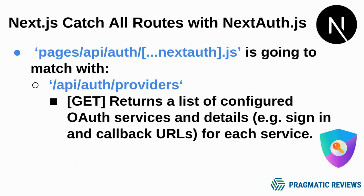Another example: /api/auth/providers — when we perform a GET HTTP request to that endpoint, it's going to return a list of configured OAuth services and details, for example sign-in and callback URLs for each service.